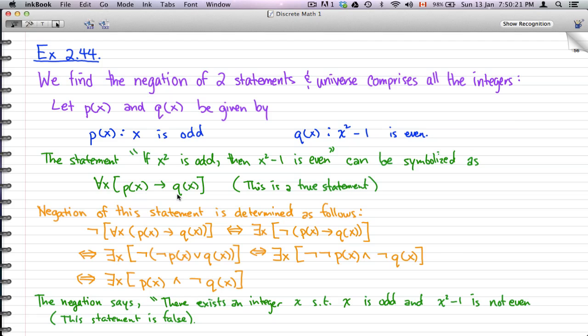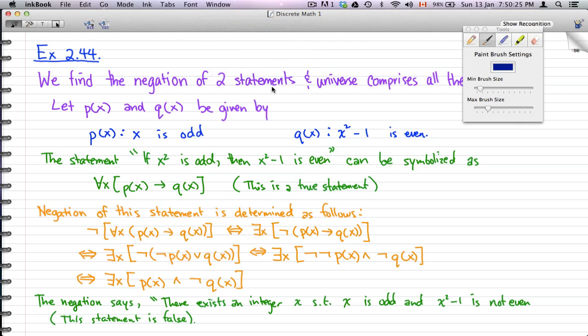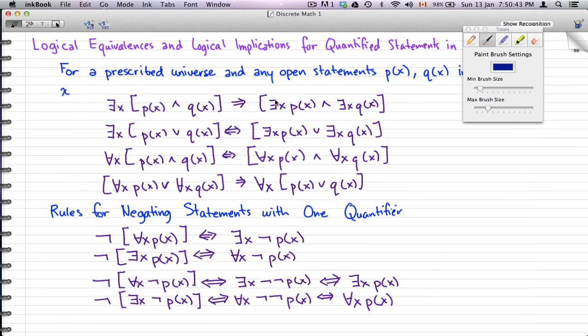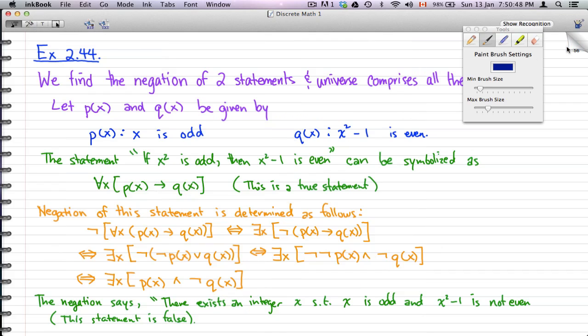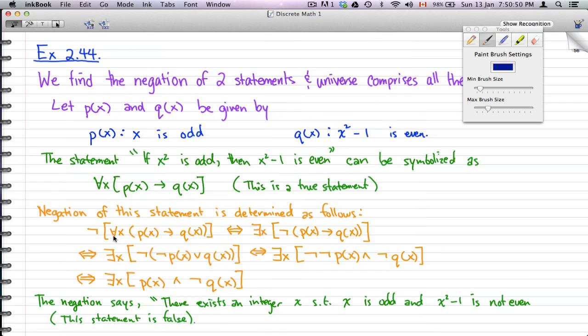We're going to negate this statement. What we did here is put a negation symbol in front of that whole statement, and using the rules we just learned, we know that not [for all x] equals exists x [not]. So that's where we got that, and in addition, we negated the inside, which gives us a negation inside the brackets.